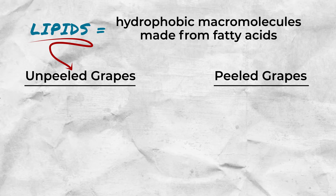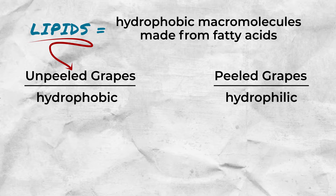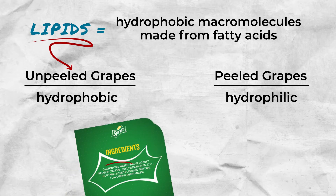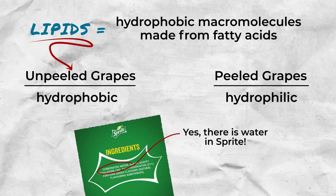We're going to see how the waxy covering, or lipid, is hydrophobic, and a grape without the waxy covering mimics hydrophilic. A cell membrane has both characteristics, so now we're going to see how exactly hydrophobic and hydrophilic things interact with water.